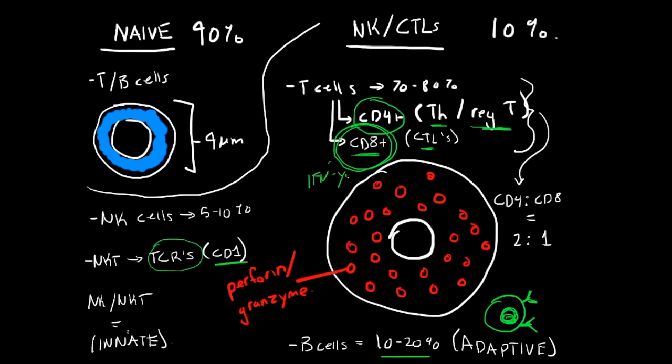So what natural killer T cells do is they kill both virus infected cells and cancer cells, and they're an important source of cytokines. In future videos, we're going to be talking about the innate immune response before moving more into this adaptive immune response of these T cells and B cells.